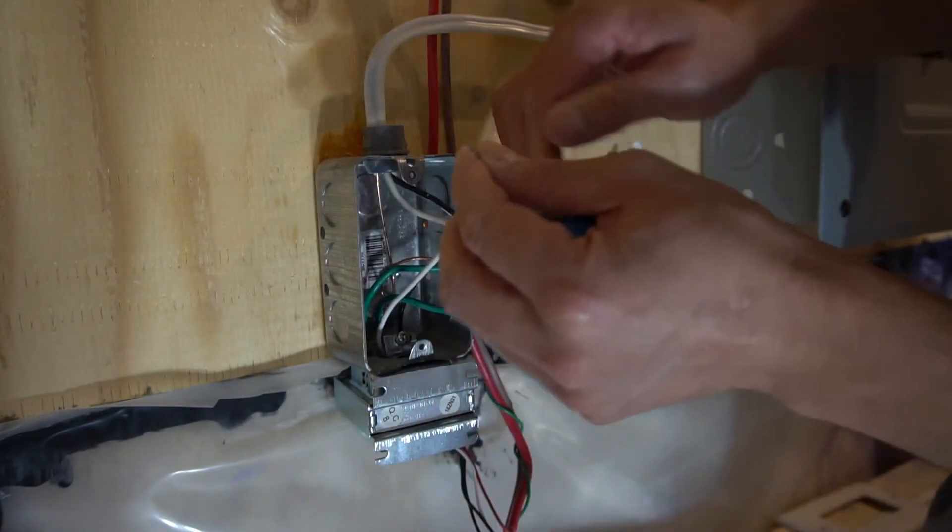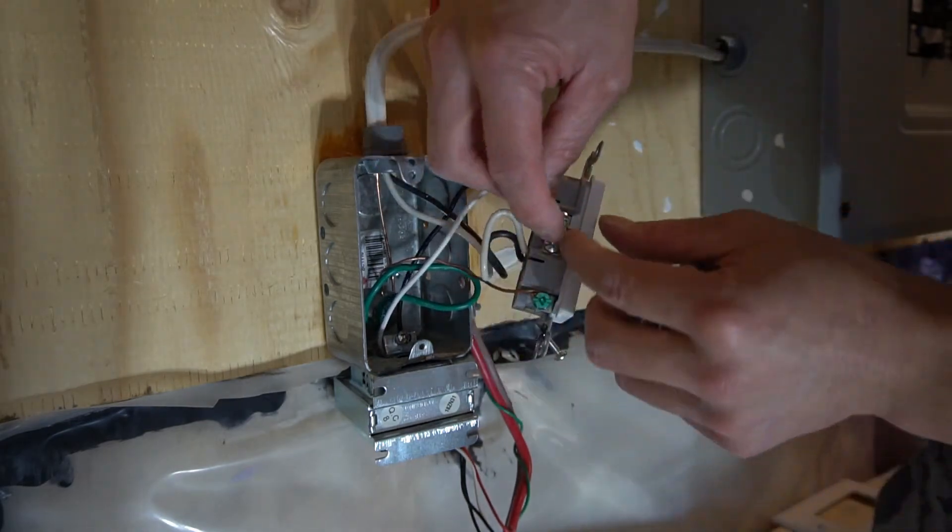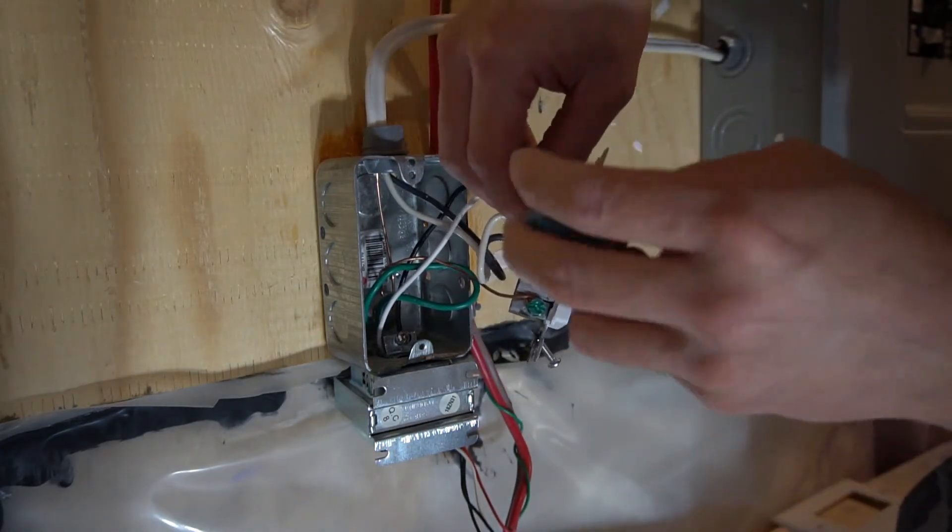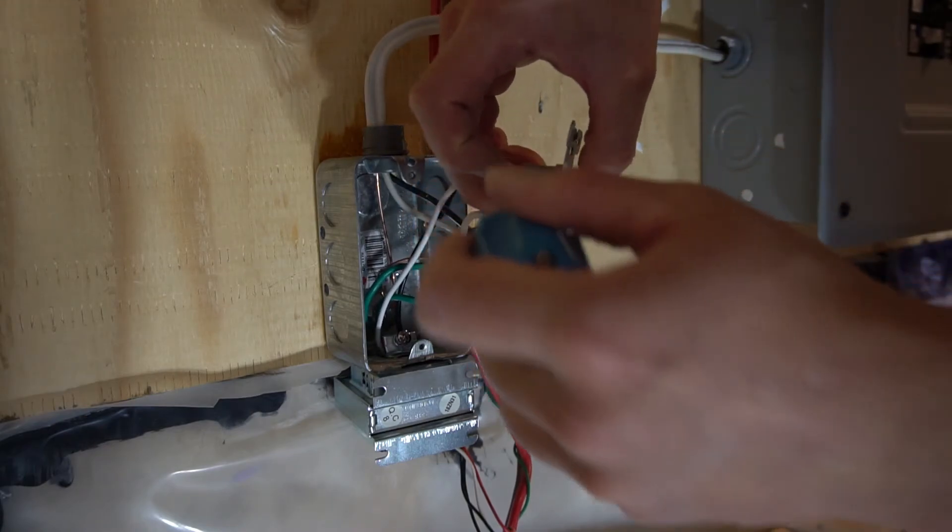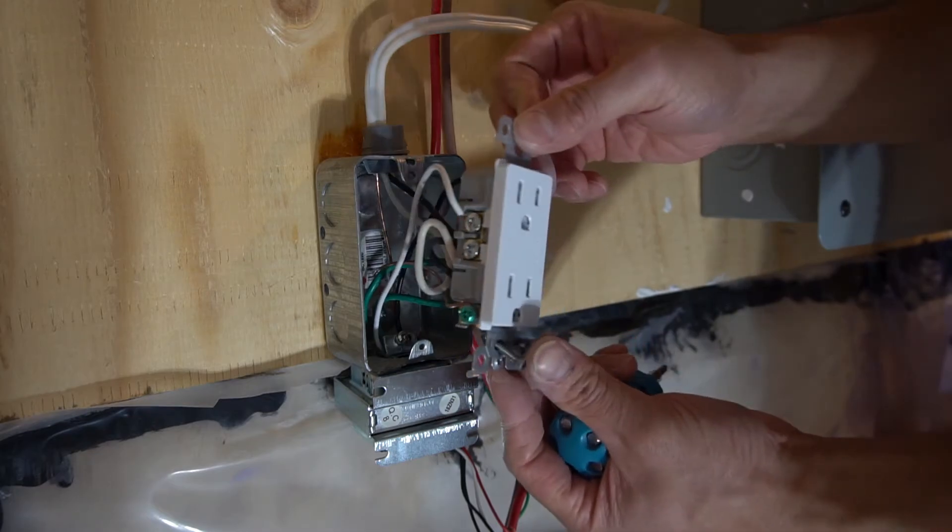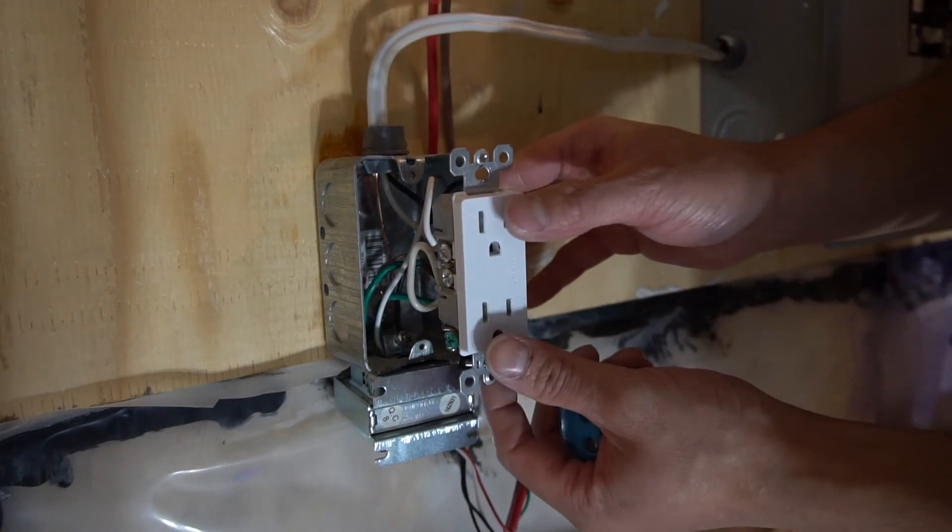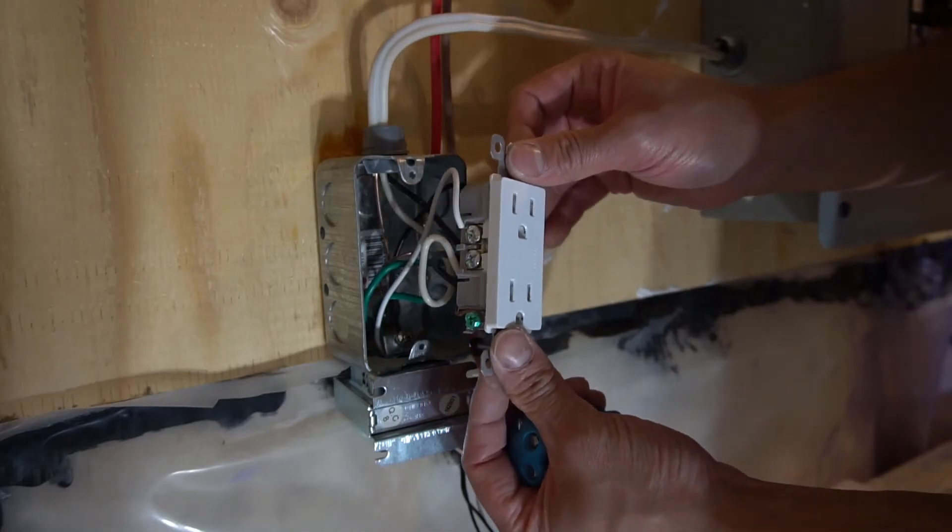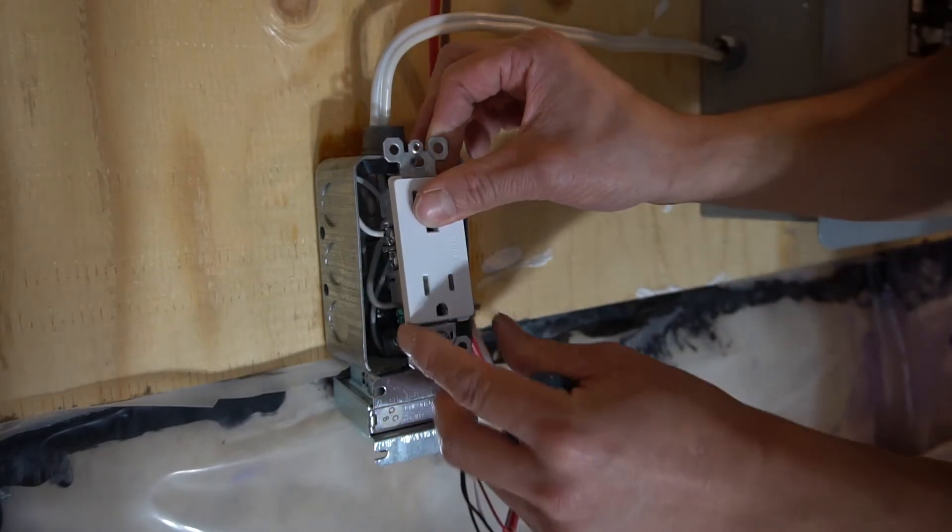Now I will do the same for the neutral wire. Now we have completed connecting the 120 source to the transformer. Now we can put the plug back on.